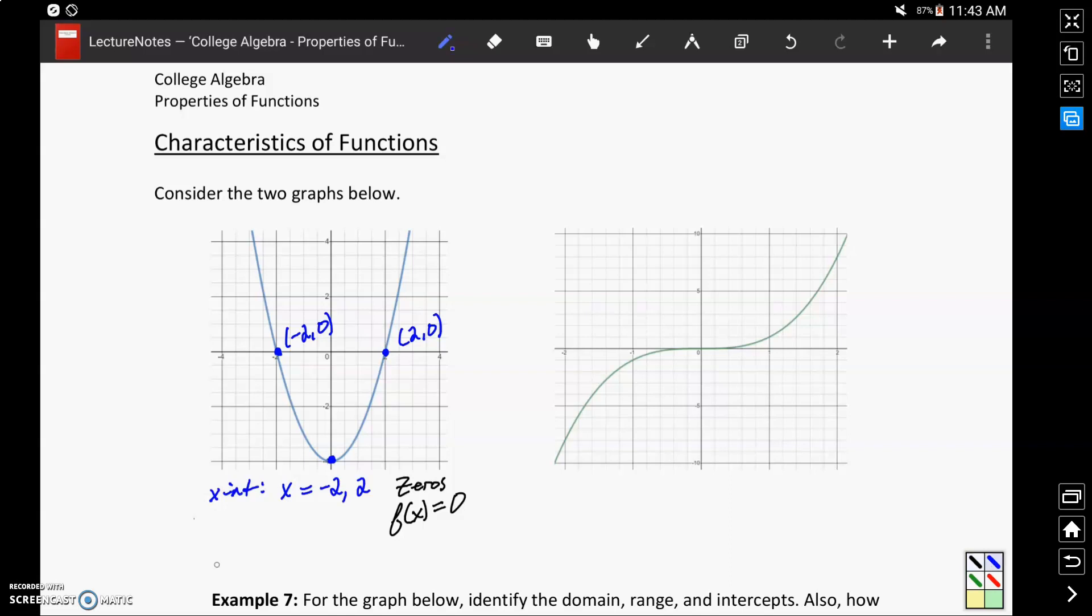We also have a y-intercept in this case occurring at y equals negative 4, or we could identify that with the coordinate point 0, negative 4.